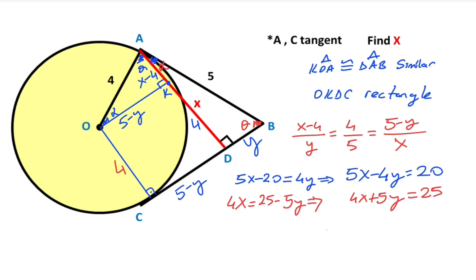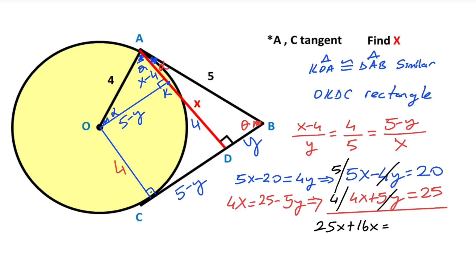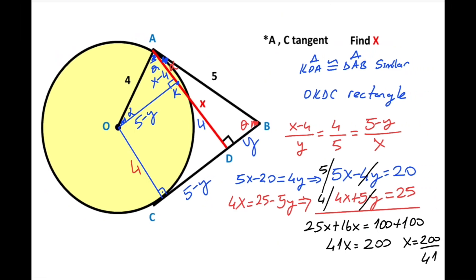Our goal is to find x, so I want to eliminate y. To do this, multiply the first equation by 5 and the second equation by 4, then add them together. We get 25x plus 16x equals 100 plus 100. Therefore 41x equals 200, so x equals 200 over 41. That was the first method.